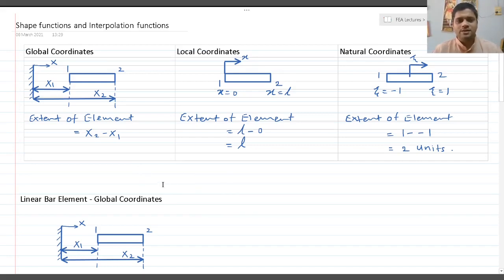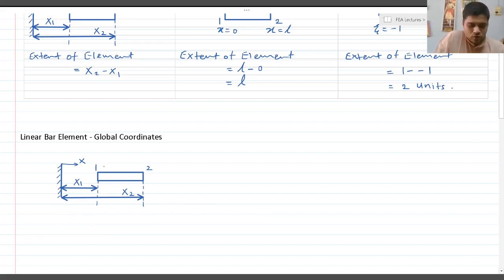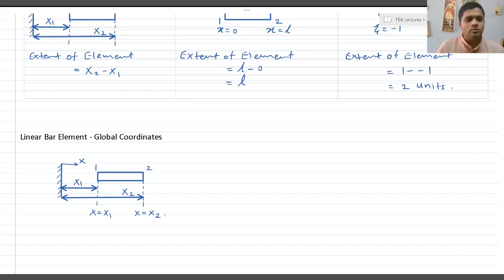Now we will find shape functions and interpolation functions for the linear bar element using all three coordinate systems. Starting with global coordinates: the field variable x has value x1 at node 1 and value x2 at node 2. The first method is the conventional method.